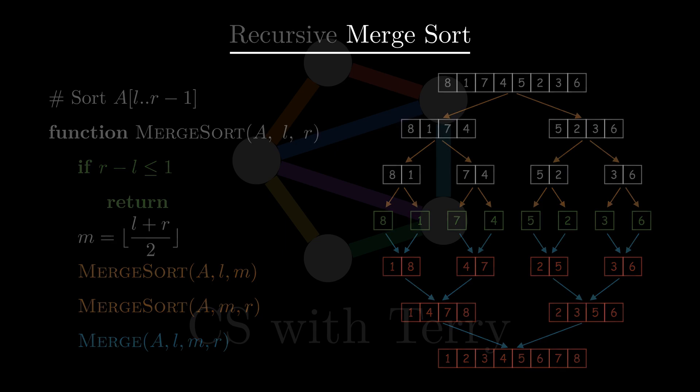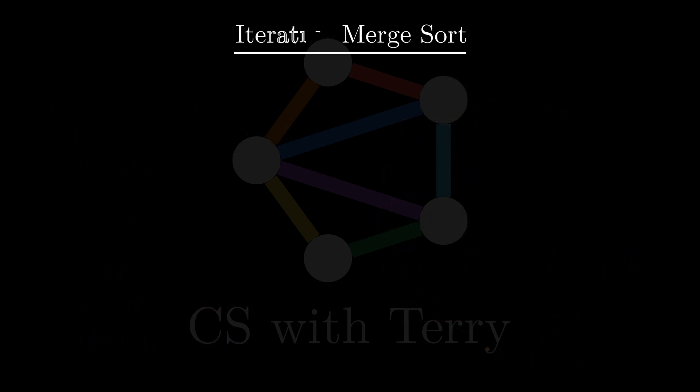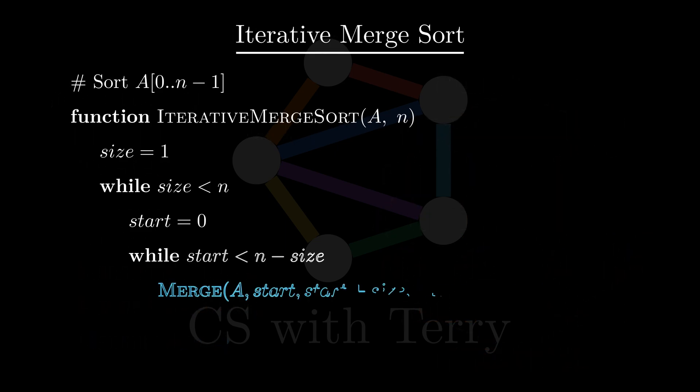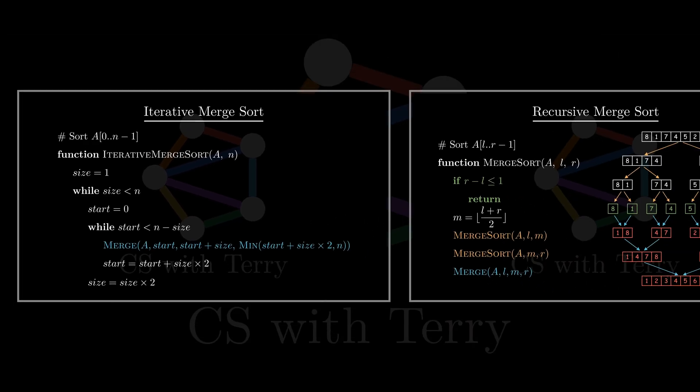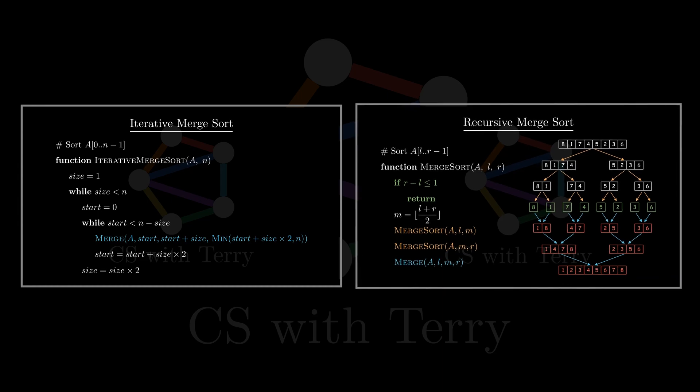Can we also implement merge sort through iteration? The answer is yes. The following code is the iterative version of merge sort. You can pause and take a closer look if interested. Although merge sort can be implemented in an iterative manner, the logic is very confusing and boundary processing is often error-prone. So for merge sort, recursion is more elegant and concise.